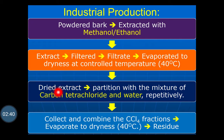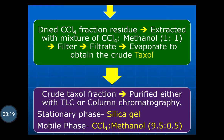The dried extract residue is partitioned with a mixture of carbon tetrachloride and water, successively and repetitively. The carbon tetrachloride fraction is collected and combined, then evaporated to dryness again at a controlled temperature of 40 degrees Celsius to obtain the residue. This residue is then extracted with a mixture of carbon tetrachloride and methanol in the ratio of 1:1.